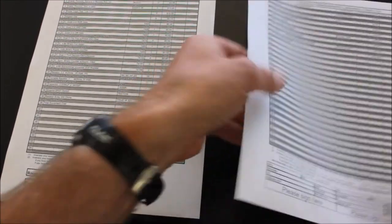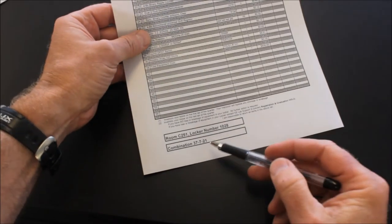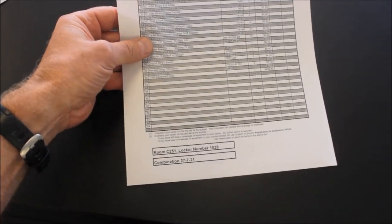Then you will keep the student's form for our records and give this other form to the student where they have their locker number and combination so they can get into their equipment.